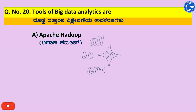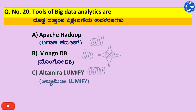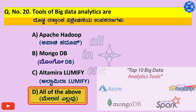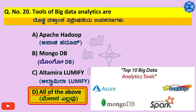Question 20. Big Data tools: A. Apache Hadoop, B. MongoDB, C. Altamira, D. All of the above. Right answer is D. All of the above.